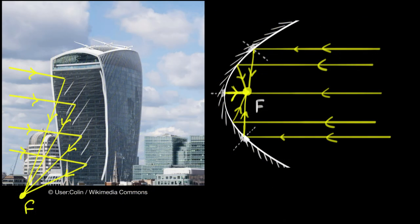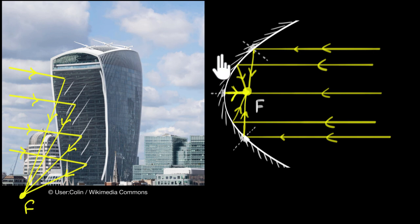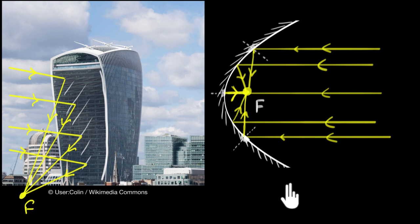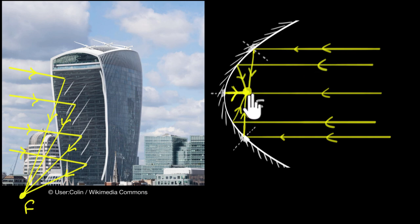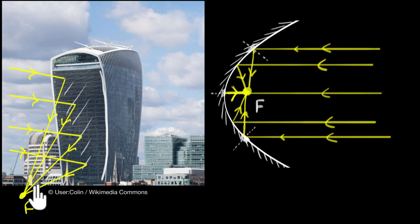To quickly summarize: when you take a mirror and curve it so that the inside part is reflecting, we call that a concave mirror. Concave mirrors can focus a parallel beam of light to a single point, concentrating that light — and we call that point the focus. That's why the Walkie Talkie Building, acting like a concave mirror, ends up burning things when they are placed at the focus of that particular building.